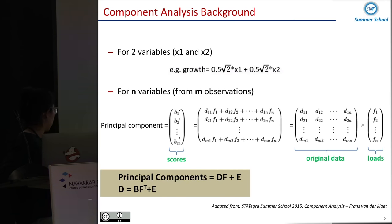We can write this like a matrix. So the principal components is the matrix of data multiplied by the loadings and some error.